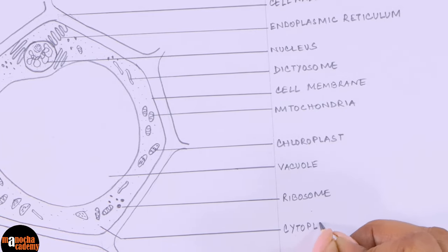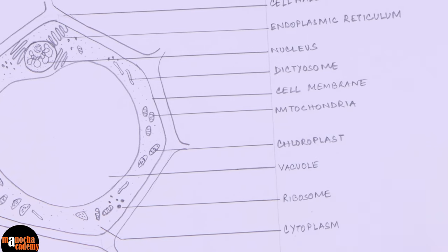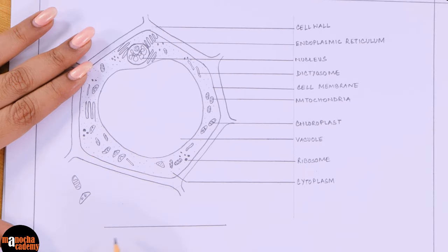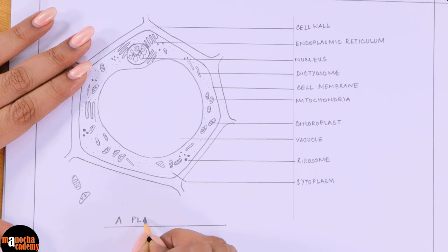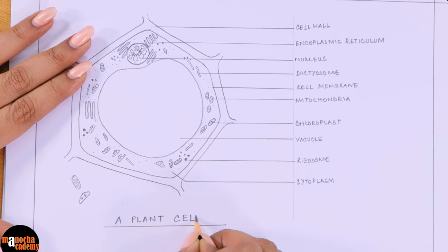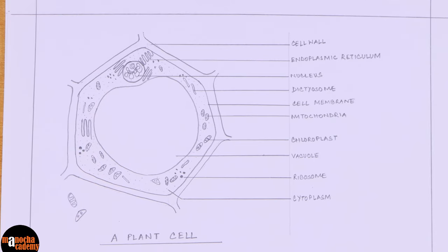So that is a plant cell. We will give a footer and write 'a plant cell.' Okay, so that is how the diagram of your plant cell should look like, and that is how very easily and systematically you can draw the diagram of a plant cell.